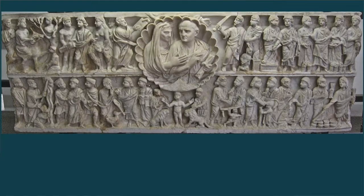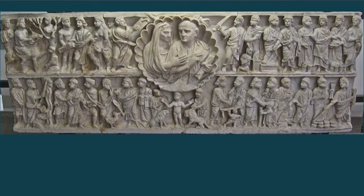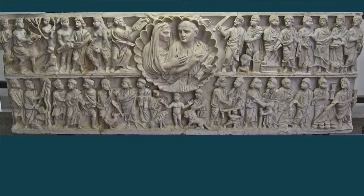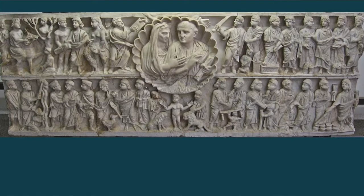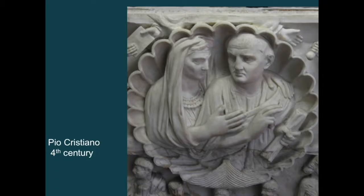This is a male couple tomb. In Roman funerary art, when a man and woman are shown together, the male is always the one holding the scroll. Here he has his hands in a speech gesture, and his wife has her arm affectionately over his. This double-register sarcophagus could easily hold the remains of both. The close-up shows the male with the speech gesture clearly.